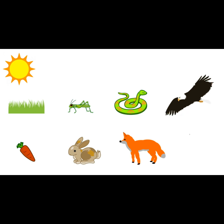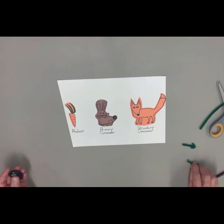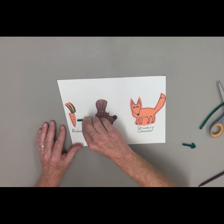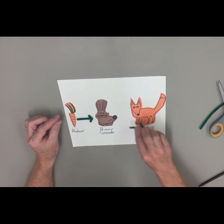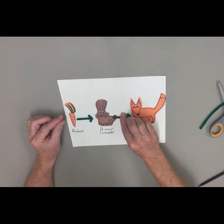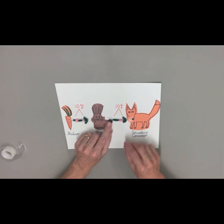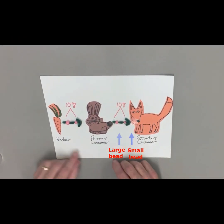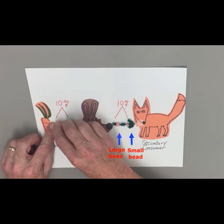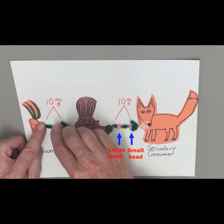Food chains often include arrows to illustrate the direction of energy flow. Is it possible to make a model of a food chain or food web using everyday materials? Good luck with your food chain or food web!